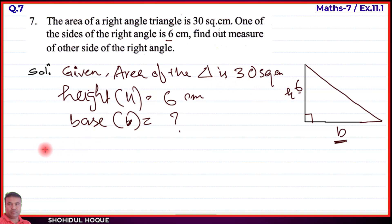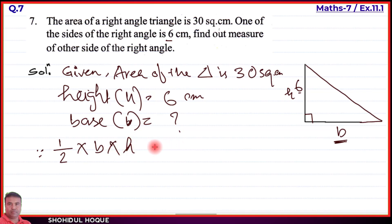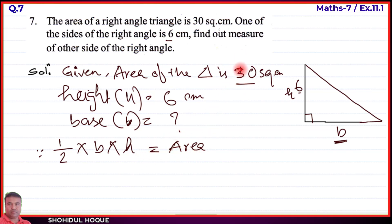The formula for the area of a triangle is: area = half into base into height. We apply this formula and write the area value on one side and the expression on the other side.